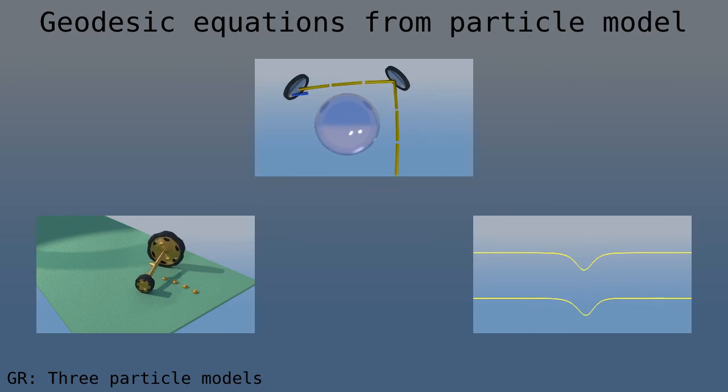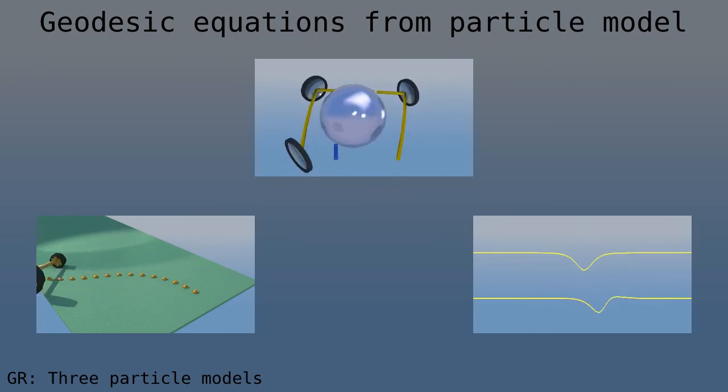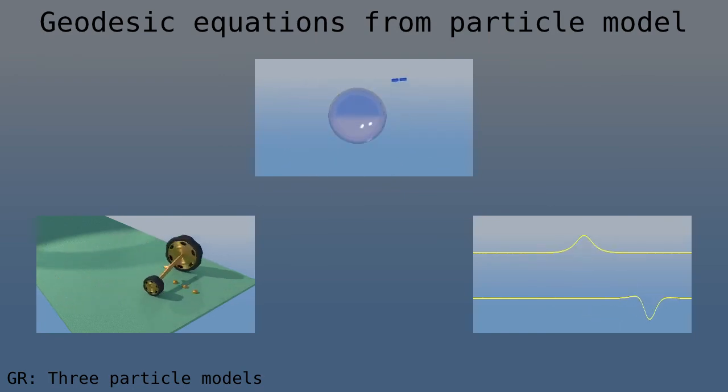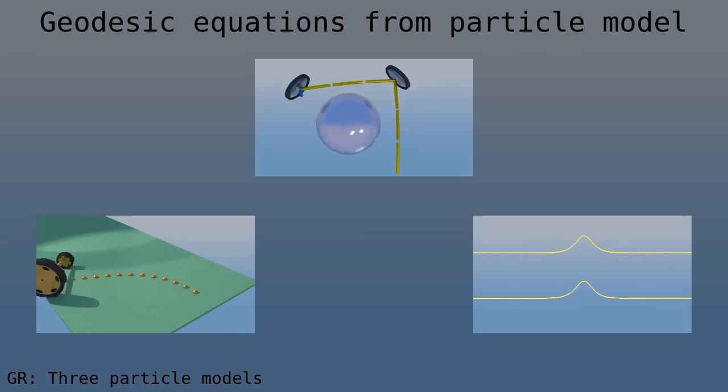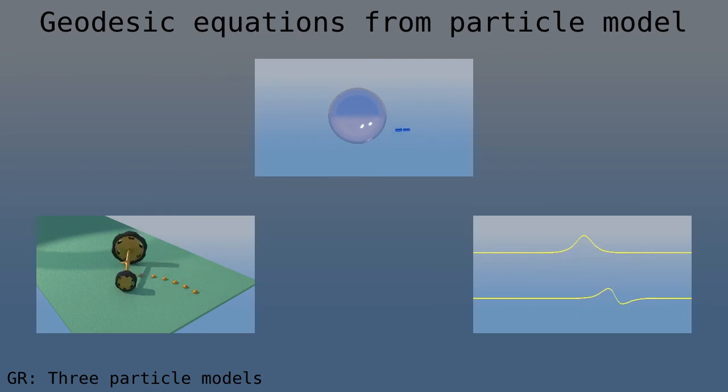When a particle only feels the force of gravitation, it follows the geodesic. And it turns out that if you calculate the path of a cart with wheels that vary in speed and size, you can derive the geodesic equations.